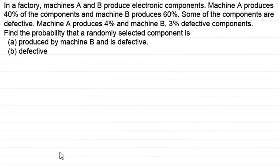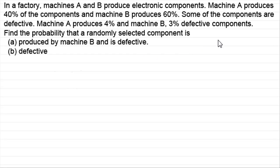Hi. In previous tutorials I had shown you how to draw probability tree diagrams, put the probabilities on, and combine them to work out the probabilities of various events. What I've got here is just another example that you might like to try on your own — pause the video and I'll run through this. After this question I've also got a much harder question for you to try.